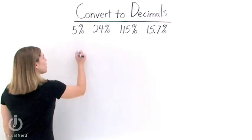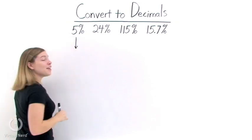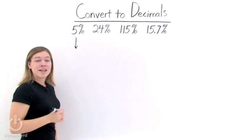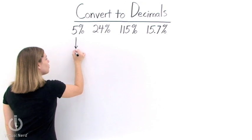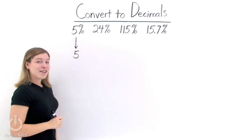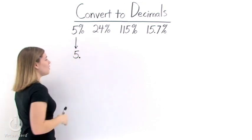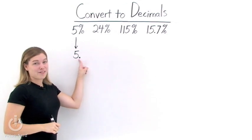So first, let's look at 5%. Let's convert 5% to a decimal. Well, we need to drop the percent sign, so we'll just have 5. And then we need to look at the decimal point. 5 is a whole number, so the decimal point is right here.